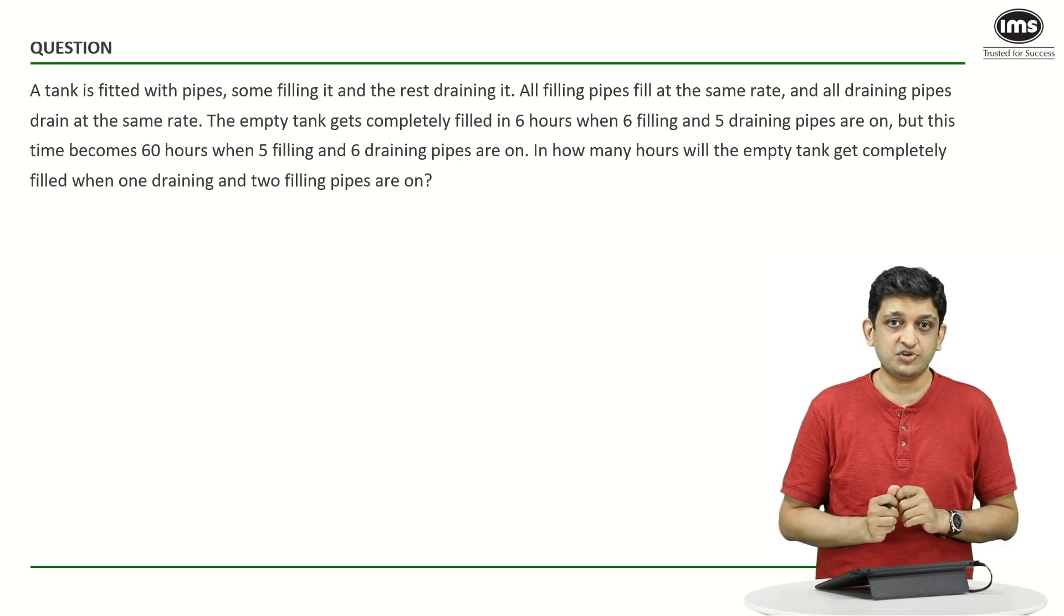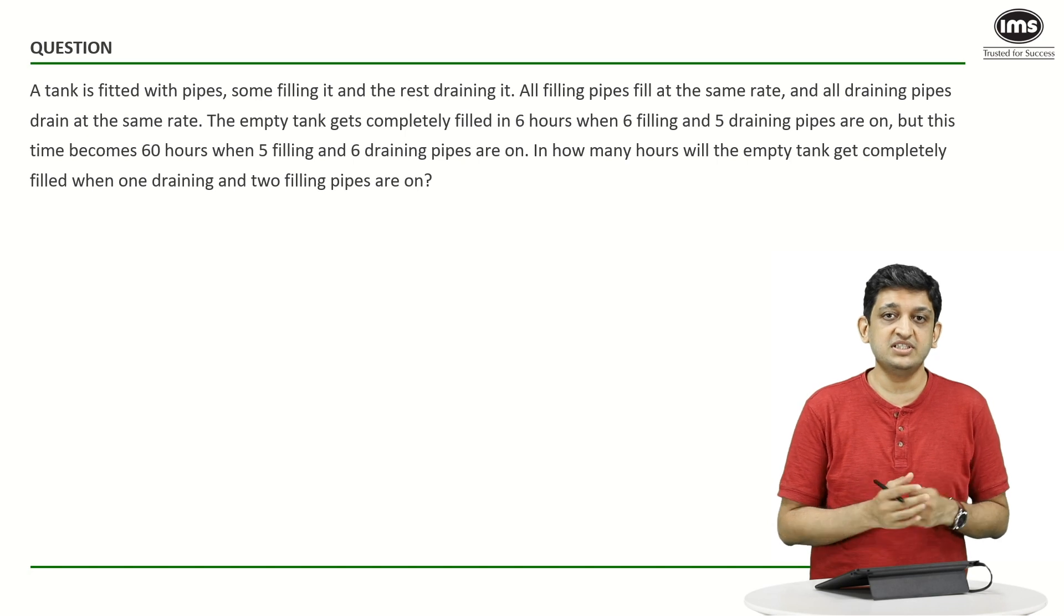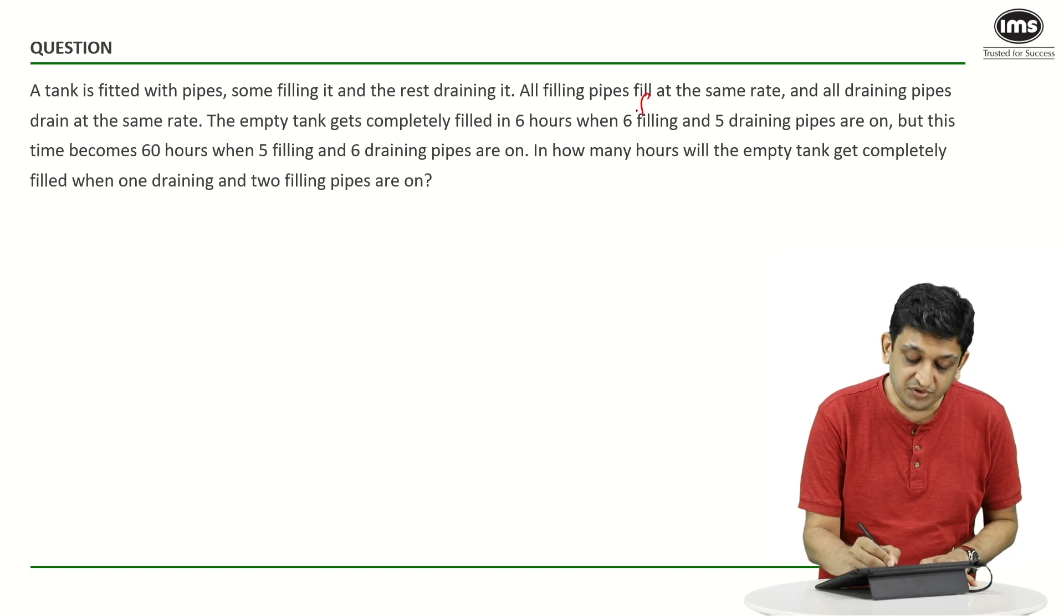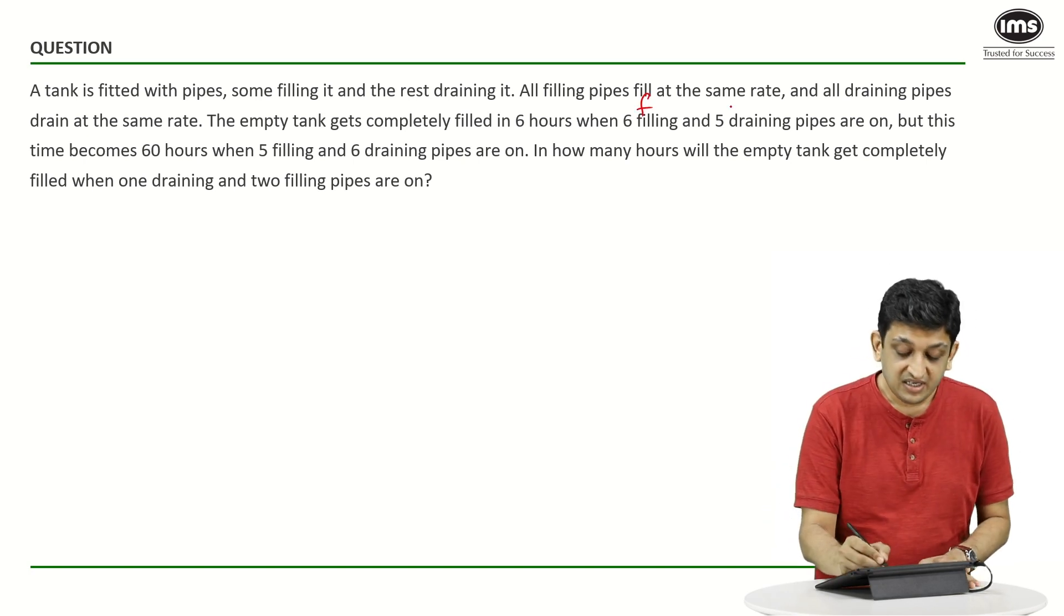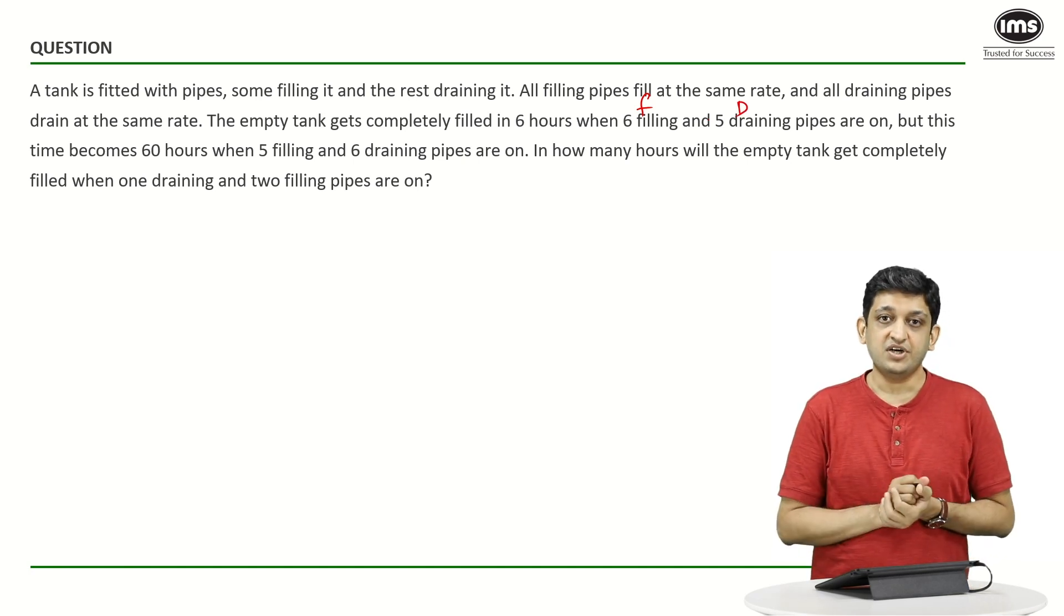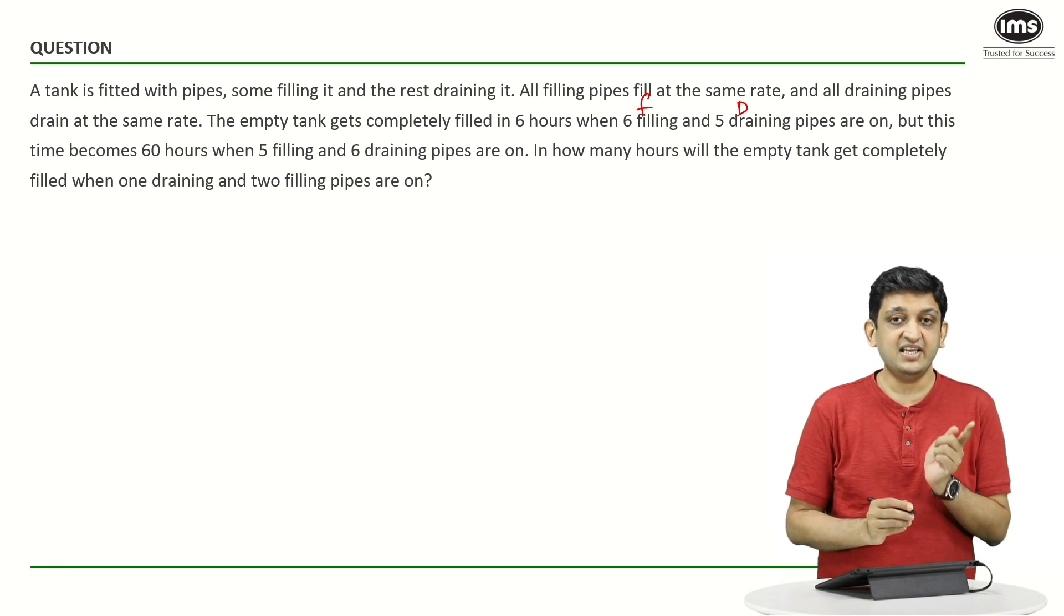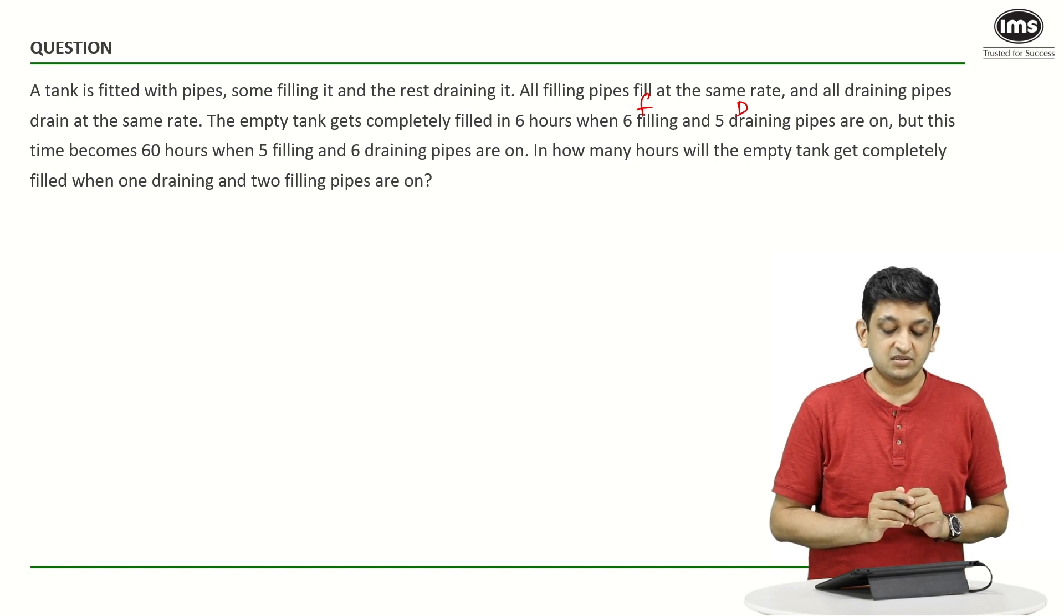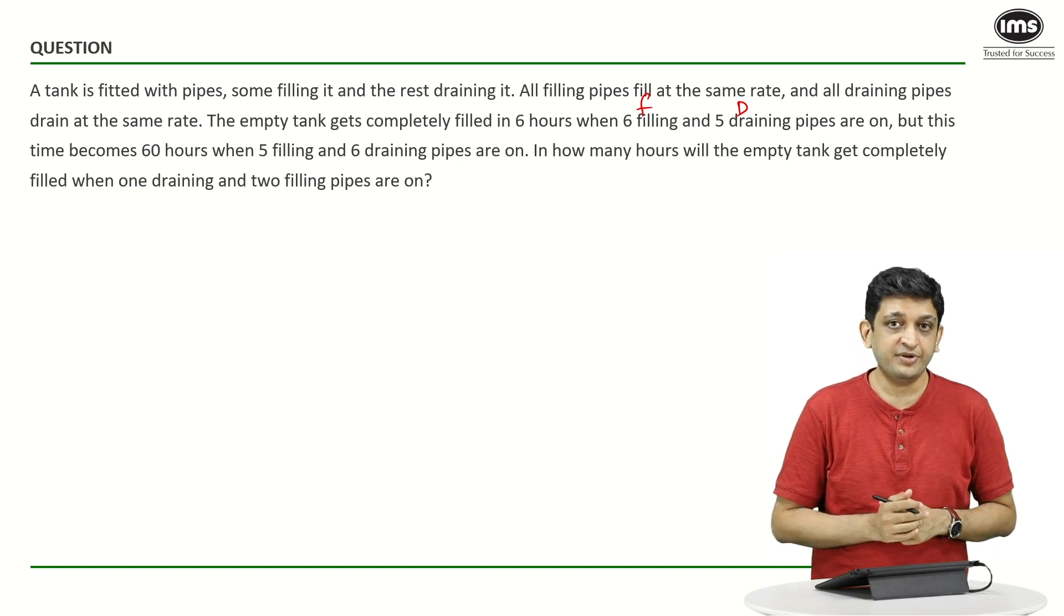So, if you look at the first method of solving this, we have to understand what is the amount of effort that goes into this entire thing. Let us say, for example, that each pipe fills F units per hour and each draining pipe drains D units of water every hour. So, what we are saying is for 6 hours, 6 filling and 5 draining pipes are operational.